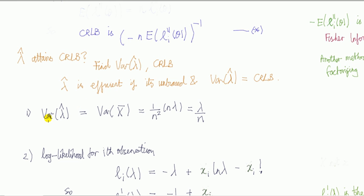Step one: let's find the variance first. The variance of lambda hat—and lambda hat is given by x bar—the variance of each X_i is lambda, there's n of them, so we get lambda over n.